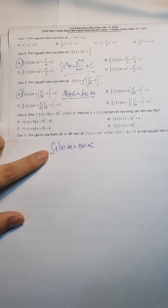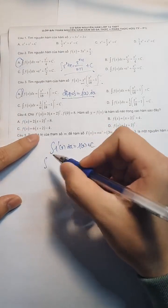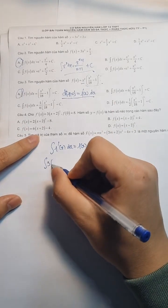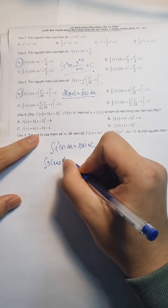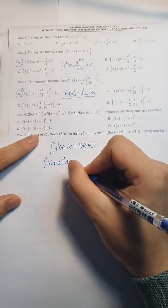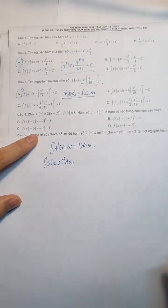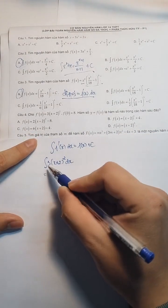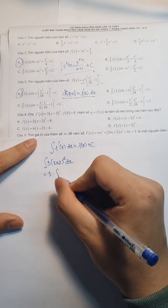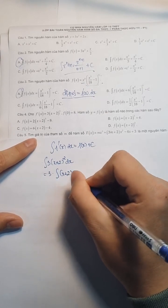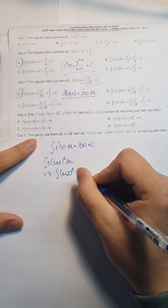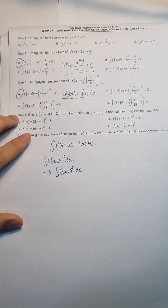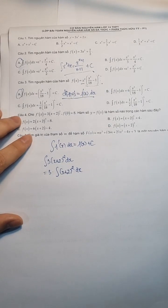Các bạn áp dụng này nhé. Thì ra nguyên hàm của 3 nhân với (X+2)² dx. Bây giờ anh sẽ đưa cái số 3 ra ngoài. Thì ra 3 lần như đây: nguyên hàm của (X+2)². Áp dụng công thức anh cho rồi đúng không? Công thức anh cho rồi.